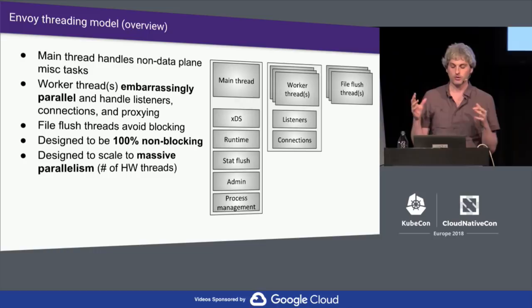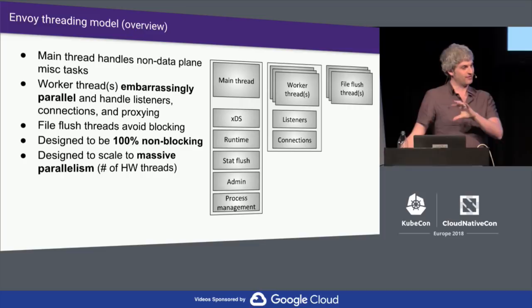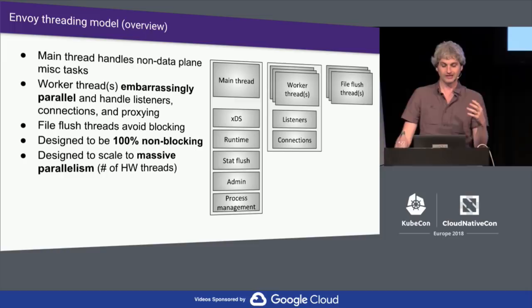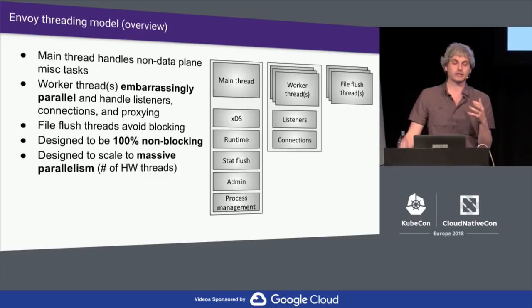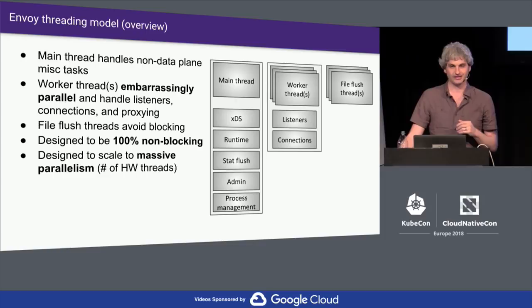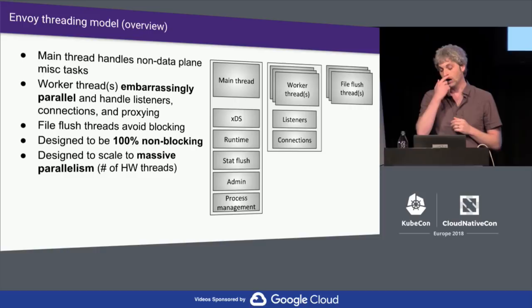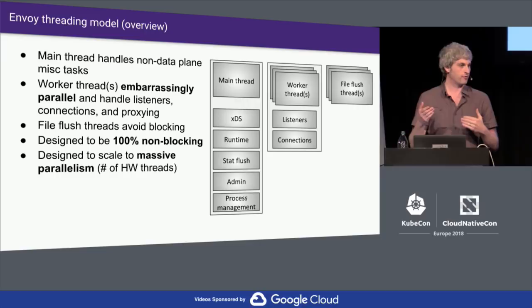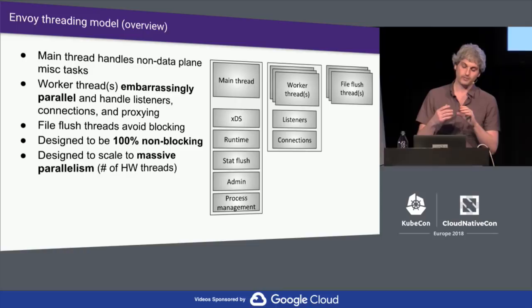One thing worth pointing out is that certain things on Linux make this difficult. If you're running one thread per hardware core, it can never block — if it blocks, you're basically stuck. There are operations in Linux where even though they're technically non-blocking, they actually block — and one of those is file I/O. In virtualized environments, when you tell the kernel to do a cache write, we see this at Lyft all the time. The way the Amazon EBS driver is written, it'll end up blocking. So there are cases where we have to push functionality off to other threads. For file flushing, we have to put data onto a file flush thread so it never blocks those data processing threads.